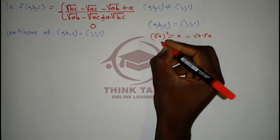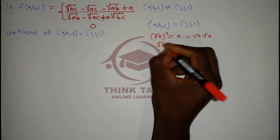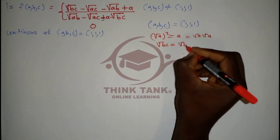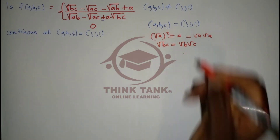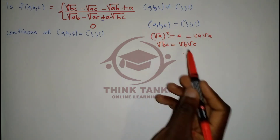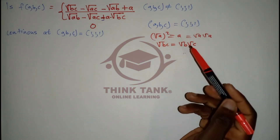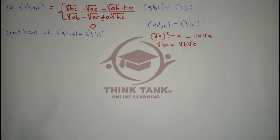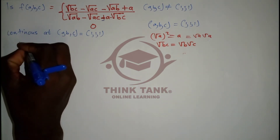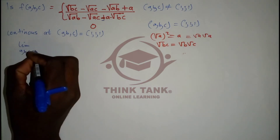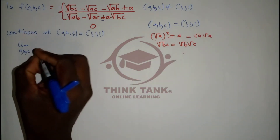The other concept we'll use is that root(bc) is the same as root(b) times root(c). With these fundamental identities, we can conquer this problem. So I'm going to write the limit as (a, b, c) approaches (1, 1, 1).